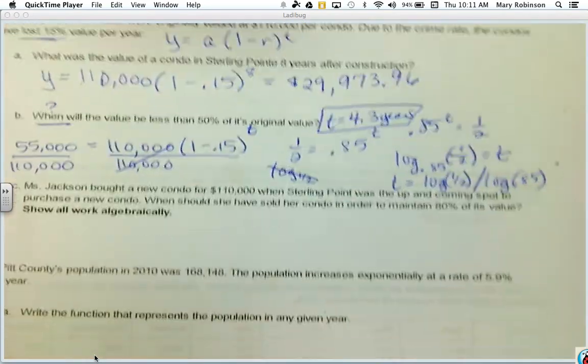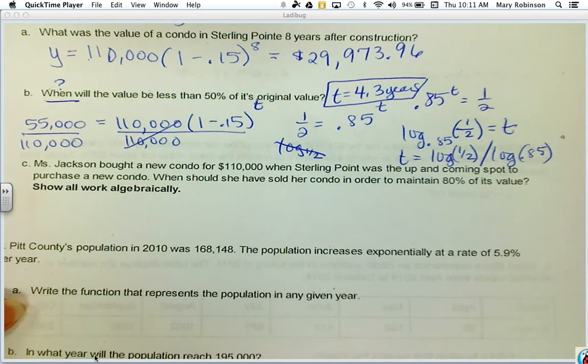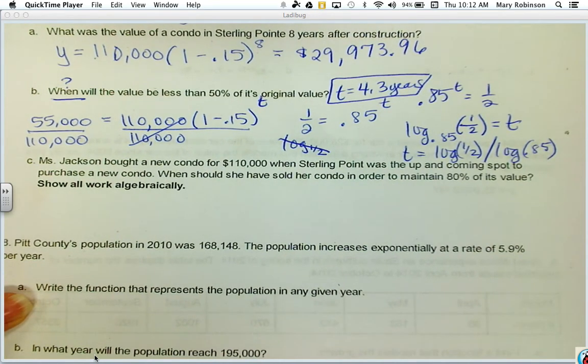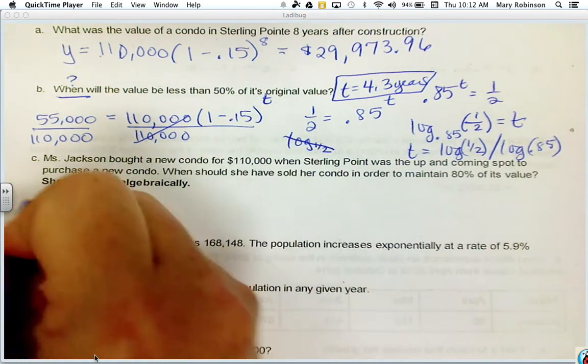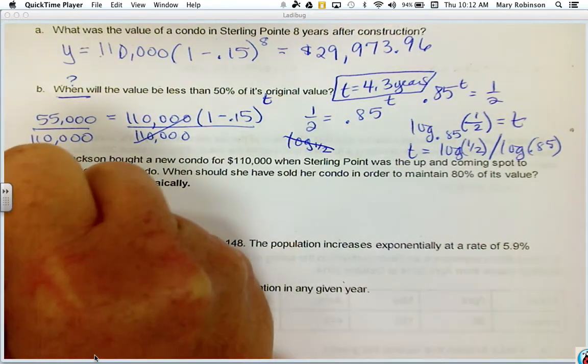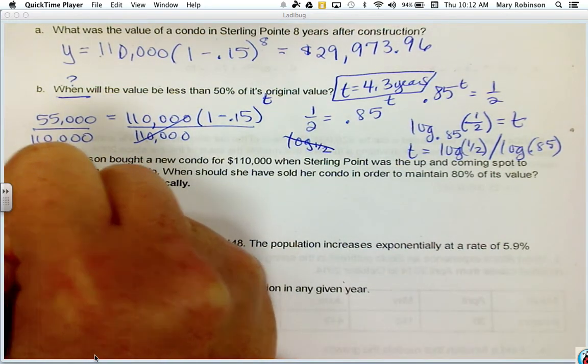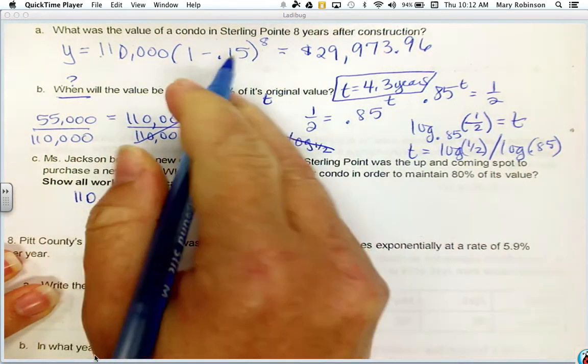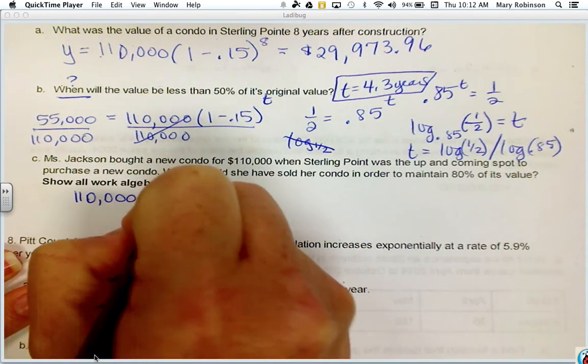Next, Ms. Jackson bought a new condo for $110,000 when Sterling Point was on the up-and-coming spot to purchase a new condo. When should she have sold her condo in order to maintain 80% of its value? So she bought it new for $110,000.